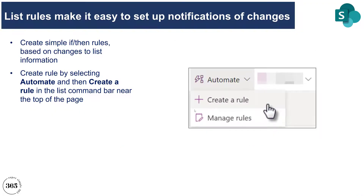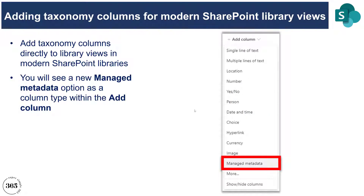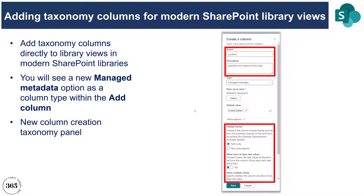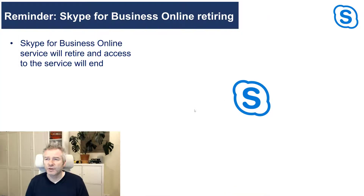Managed metadata on columns in modern SharePoint lists is getting a little bit easier. When you click Add a Column, you'll see the option to add managed metadata as a column, and when you go into it there are extra settings to make it easier to add better data. This is rolling out from early to late March.